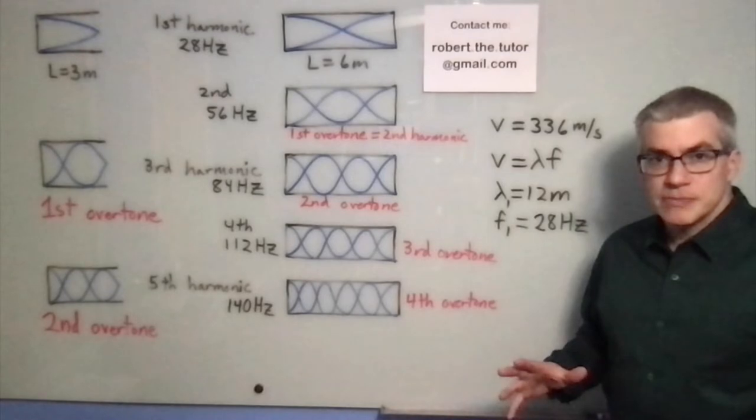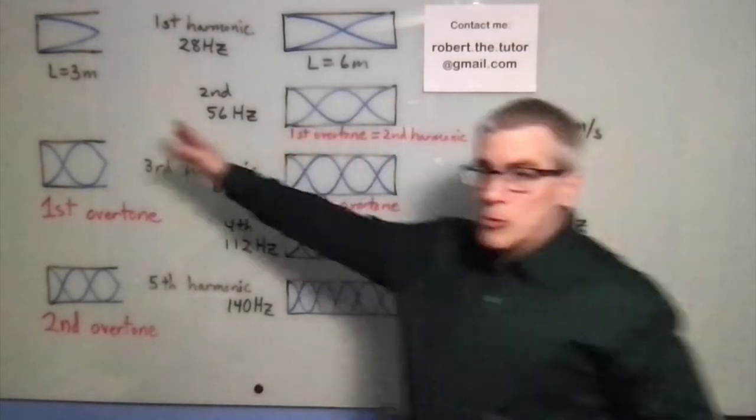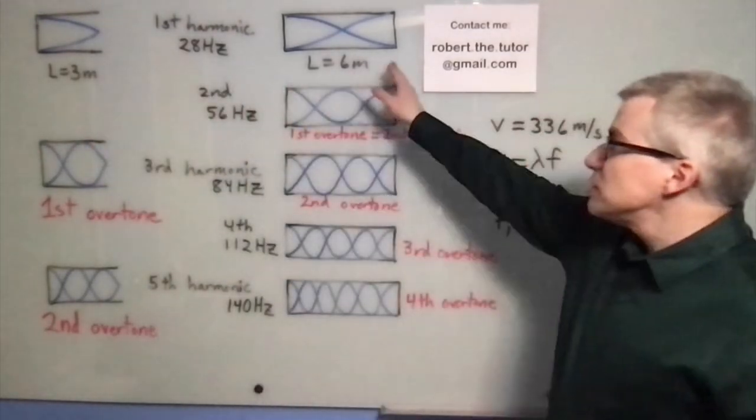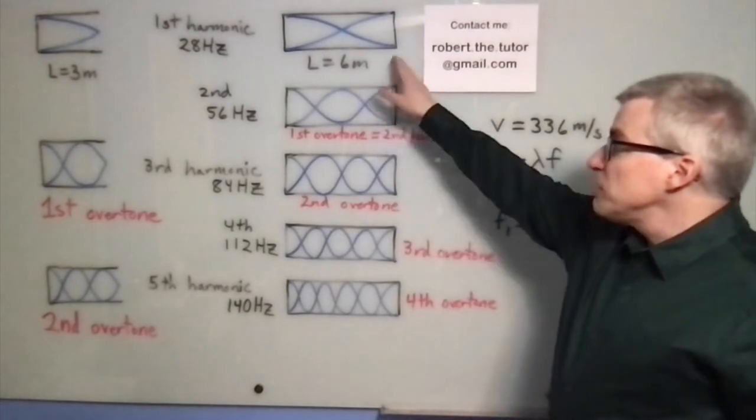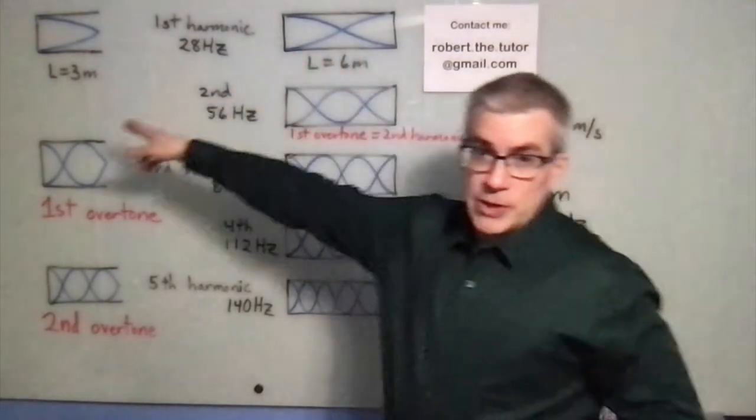Overtones versus harmonics. Suppose you have a pipe that's open at one end and a pipe that's closed at both ends, and I'm going to make this pipe twice as long as that one.